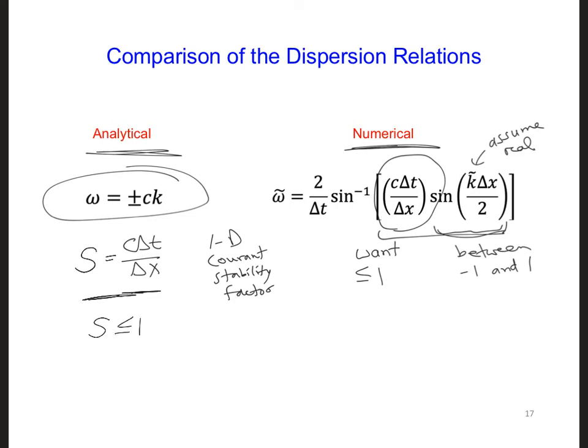We can solve for dt to determine the maximum time step increment that we can use in a 1D simulation of a wave propagating in free space. So here I'm going to solve for this term. We have delta t is equal to S delta x over c, and we want to make sure S is less than or equal to 1.